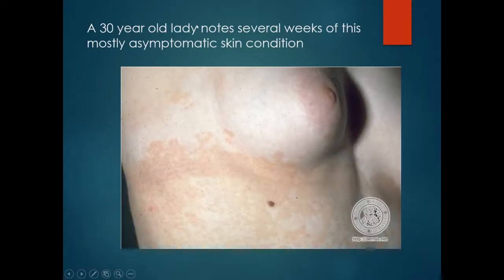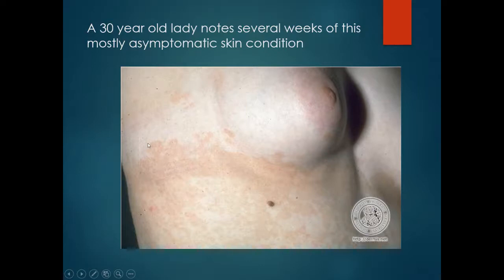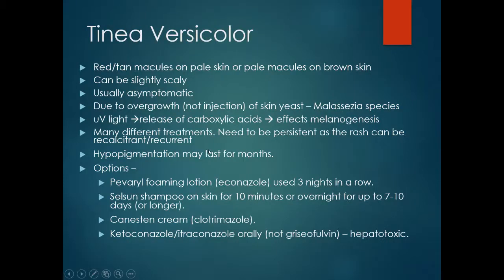A 30 year old lady notes several weeks of this mostly asymptomatic skin condition. There is an erythematous or slightly pigmented macular rash. The lady may also be a swimmer, where the skin may be more moist than usual. This is tinea versicolor.